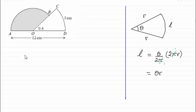So we know then that using that formula, 3 must be equal to theta, that's 0.4, times the radius r, or we might as well call it OD.